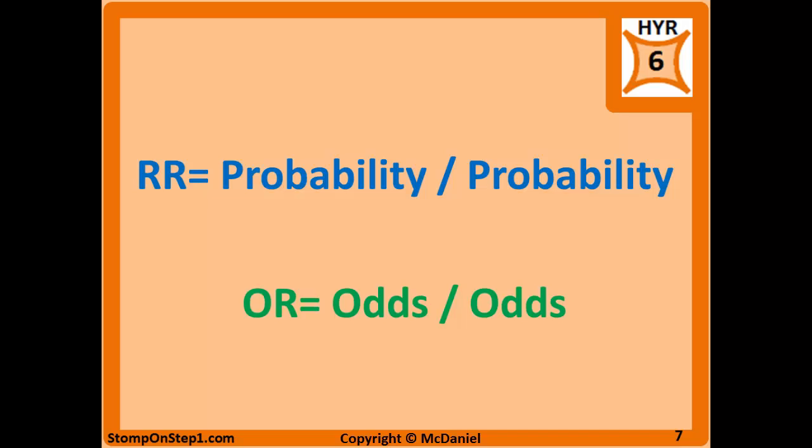The way I think about this is the odds ratio is a ratio of odds, as the name would imply, and relative risk is not a ratio of odds. So I just think of it as being the other one.